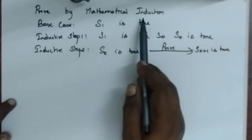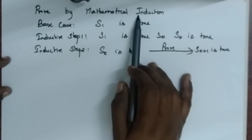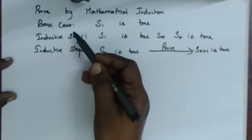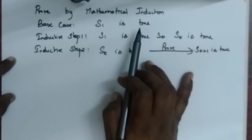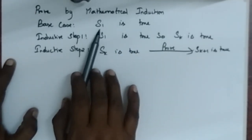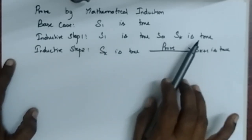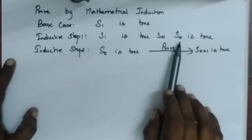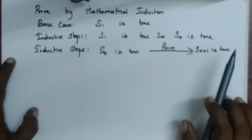Proof by mathematical induction. Whenever we say mathematical induction, we have to remember three steps. The first one is the base case, where you have to prove that S1 is true. The second one is inductive step 1 — since you have proved S1, you say that it is true for SK. The third one is inductive step 2, where you have said it is true for SK, and now you have to prove it for SK plus 1.